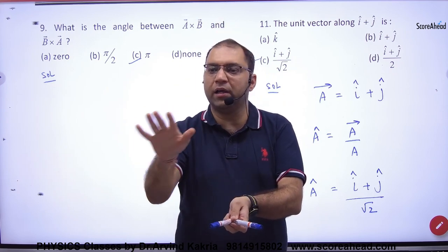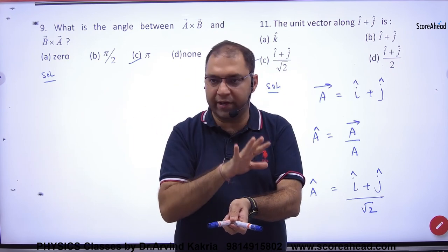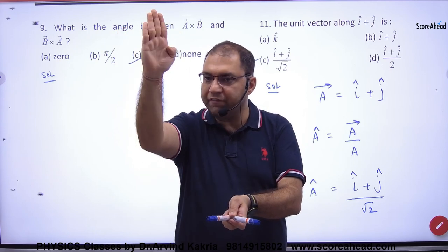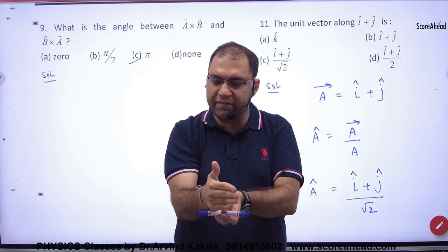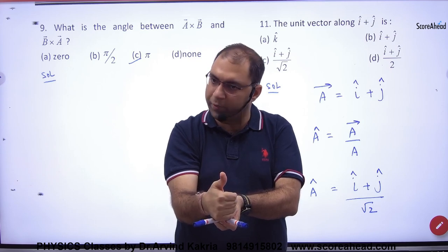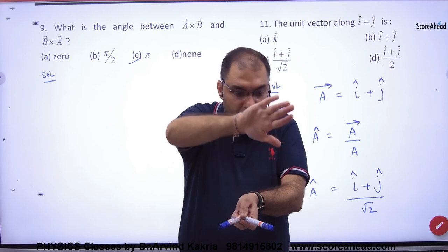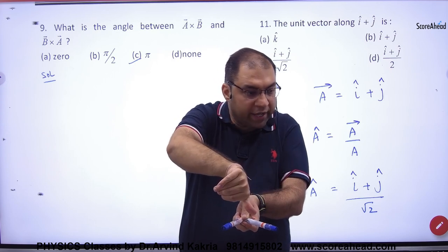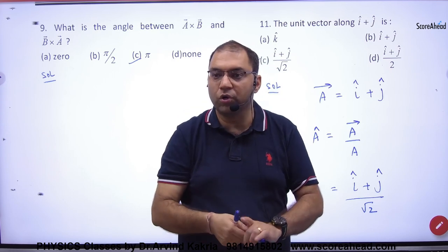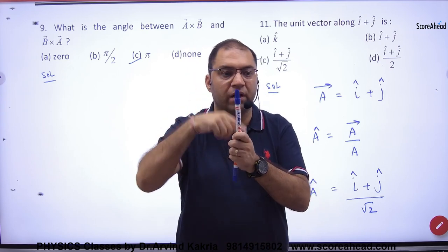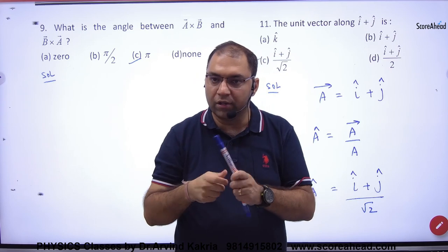I have taught you A vector cross B vector. There will be a new vector. How is the direction? Right hand rule. 4 fingers A vector to B vector, so where is the direction? Up. But if I say B vector cross A vector, the direction is below. So think, one direction up and one direction down. How is the angle? 180 degrees. Simple.